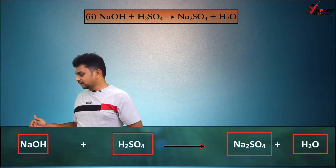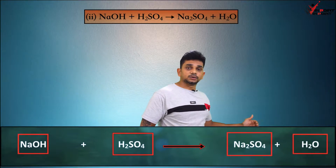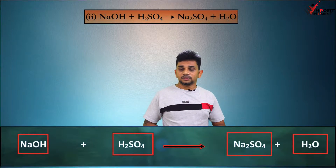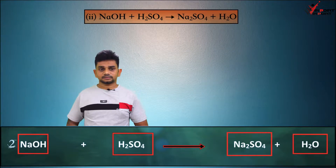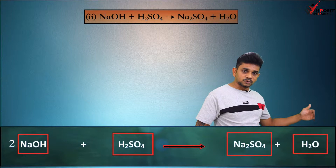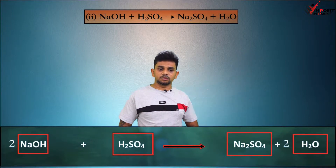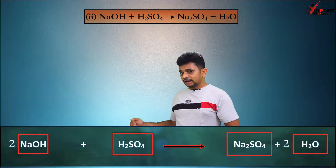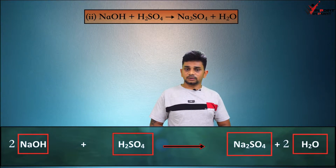Now count number of hydrogen. NaOH has 1 hydrogen, H2SO4 has 2 hydrogen — total 3 hydrogen. H2O has 2 hydrogen. We have an odd and even number, so we add a 2 to NaOH. Now 2 NaOH gives 2 hydrogen plus 2 from H2SO4 — total 4 hydrogen. We add a 2 to H2O. Sodium: 2 NaOH gives 2 sodium; Na2SO4 gives 2 sodium — balanced. Sulfur: H2SO4 gives 1 sulfur; Na2SO4 gives 1 sulfur — balanced. The balanced equation is 2 NaOH + H2SO4 → Na2SO4 + 2 H2O.